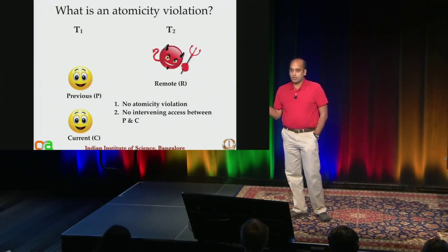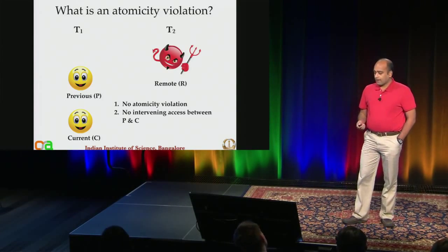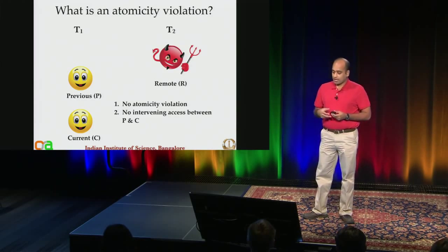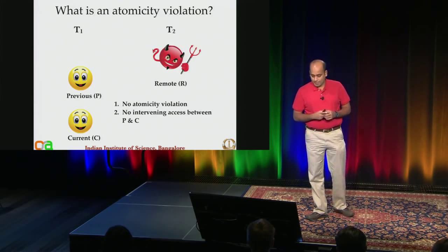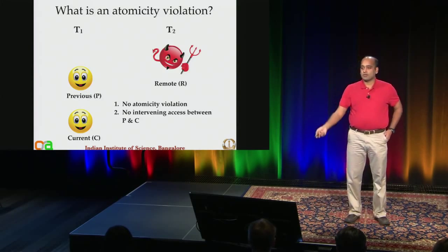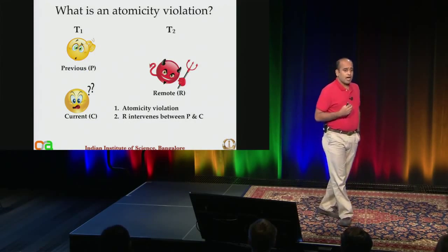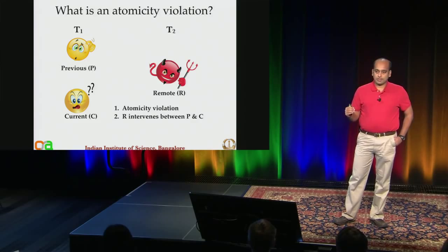Let me explain what an atomicity violation is. We have two threads T1 and T2, with shared memory accesses: P represents a previous access, C a current access, and R a remote access. If the remote access R happens before P and C, there is no atomicity violation. But if R happens between P and C, that is a problematic scenario — that is an atomicity violation.